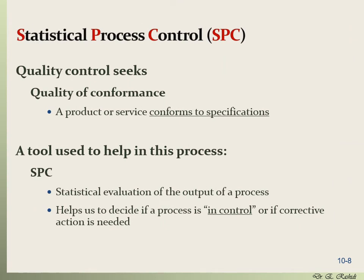Statistical process control, or SPC, is used because quality control wants to ensure that every product and service conforms to a standard or specification. SPC is a statistical evaluation of the output of a process. It helps us decide if a process is in control — that is, conforming to specification — or if it is not, meaning we need to take corrective action.